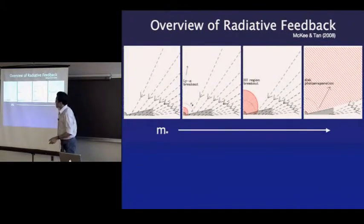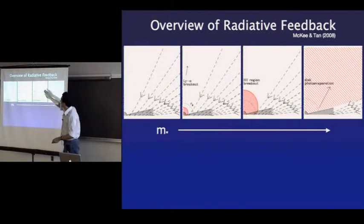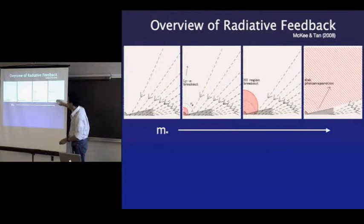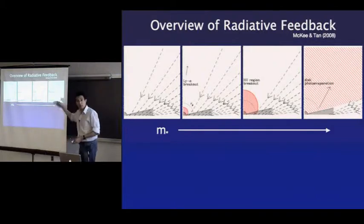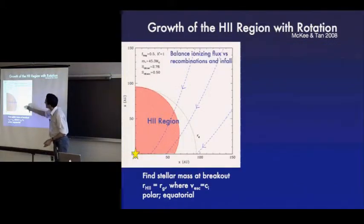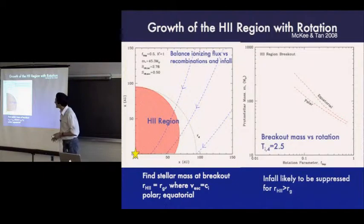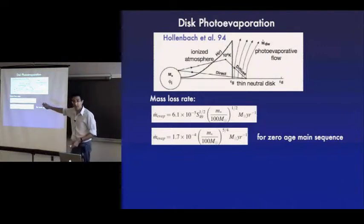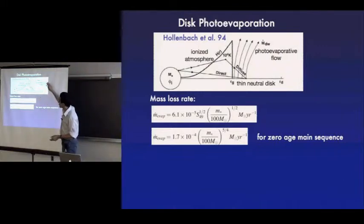Comparing to the main sequence: a 10 solar mass main sequence star has much more ionizing photon output relative to our model. Spherical accretion models put out very little ionizing flux because they have a very cool, very large photosphere. But any realistic model with rotation will have significant ionizing photon output around 30–40–50 solar masses.